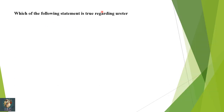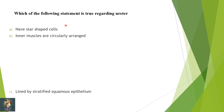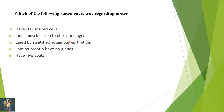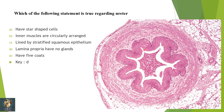Next: which statement is true regarding the ureter — star-shaped cells, inner muscles circularly arranged, lined by stratified squamous epithelium, lamina propria has no glands and has five cords? The ureter has a star-shaped lumen, not star-shaped cells. Inner muscles are longitudinal and outer muscles are circularly arranged. It is lined by transitional epithelium. It has four coats and lamina propria has no glands. Correct option is D. In the diagram you can see the star-shaped lumen lined by transitional epithelium, with mucosa, submucosa, muscularis, and serosa.